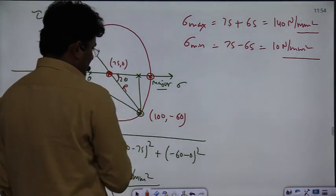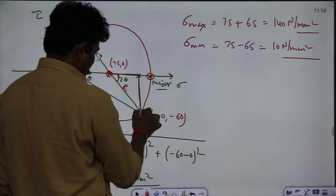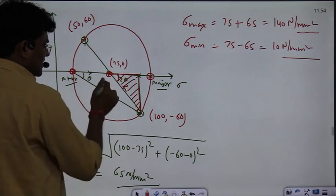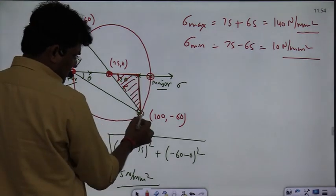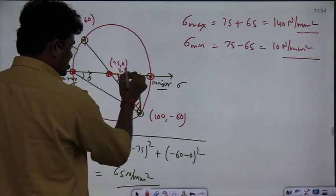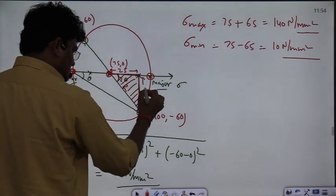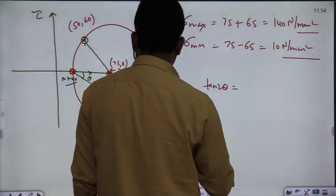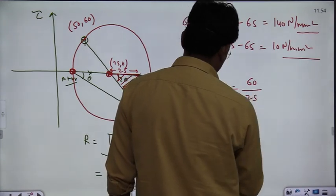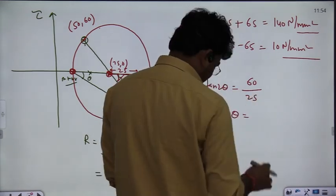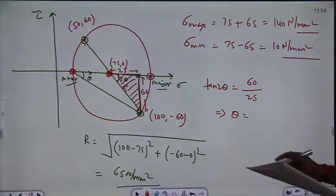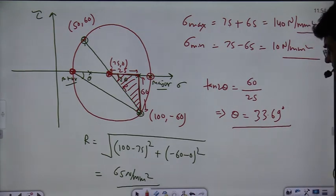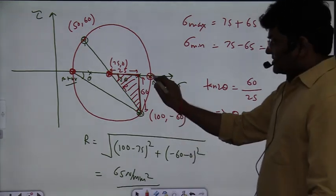Direction is also asked. We work with 2θ. From the triangle in the Mohr's Circle diagram, the x-distance from the center (75) to the point (100) is 35, and the perpendicular distance is 60. So tan(2θ) = 60 / 25, and theta comes out to be 33.69 degrees.